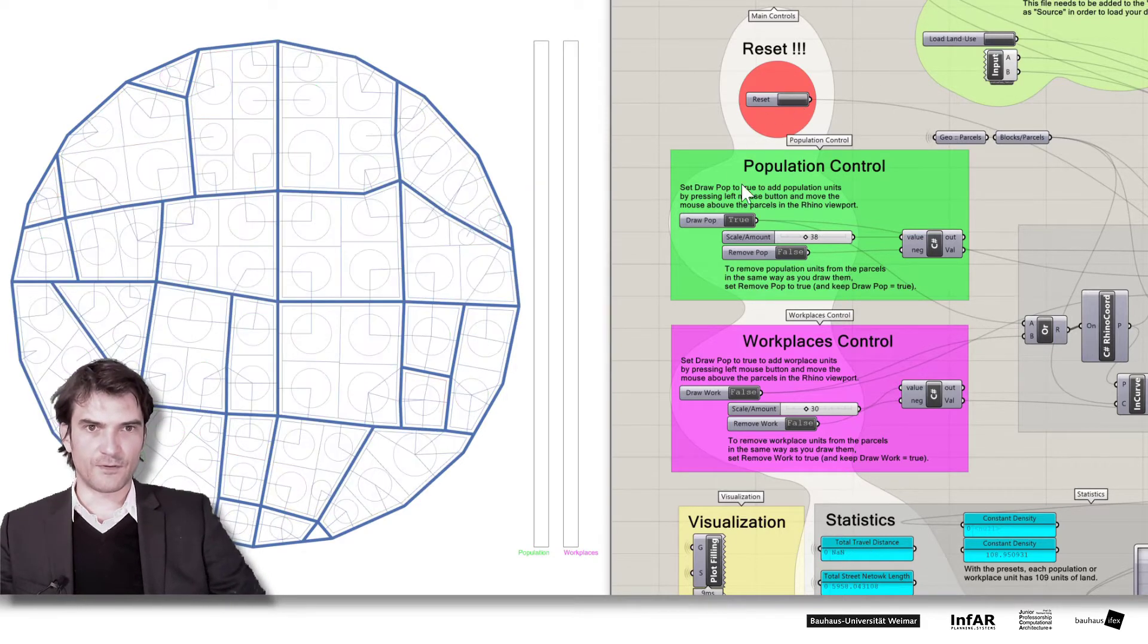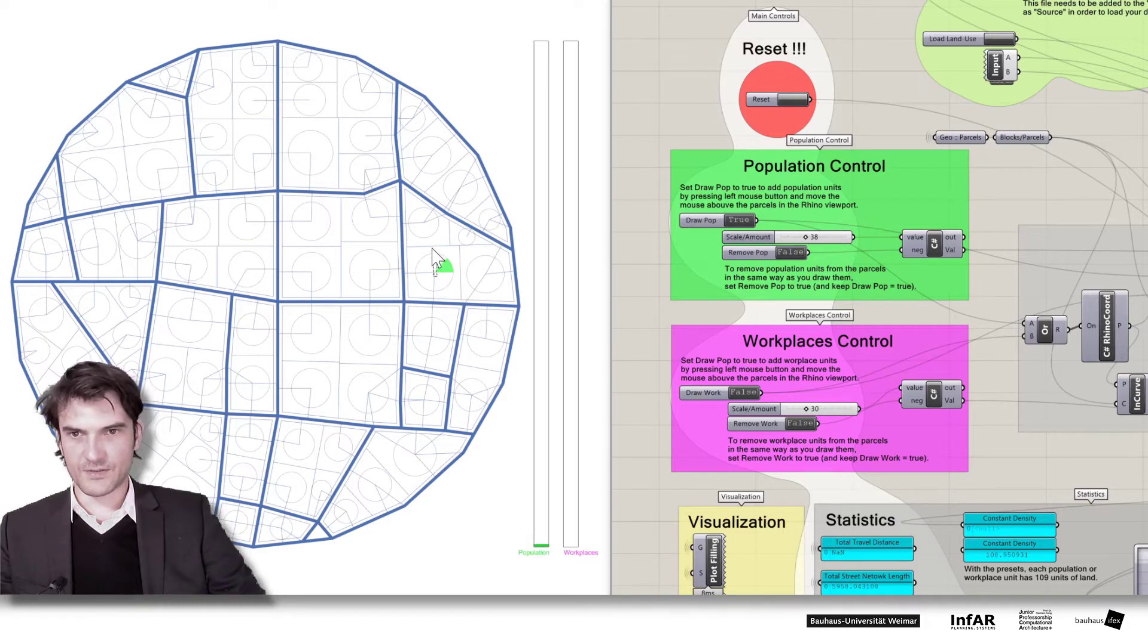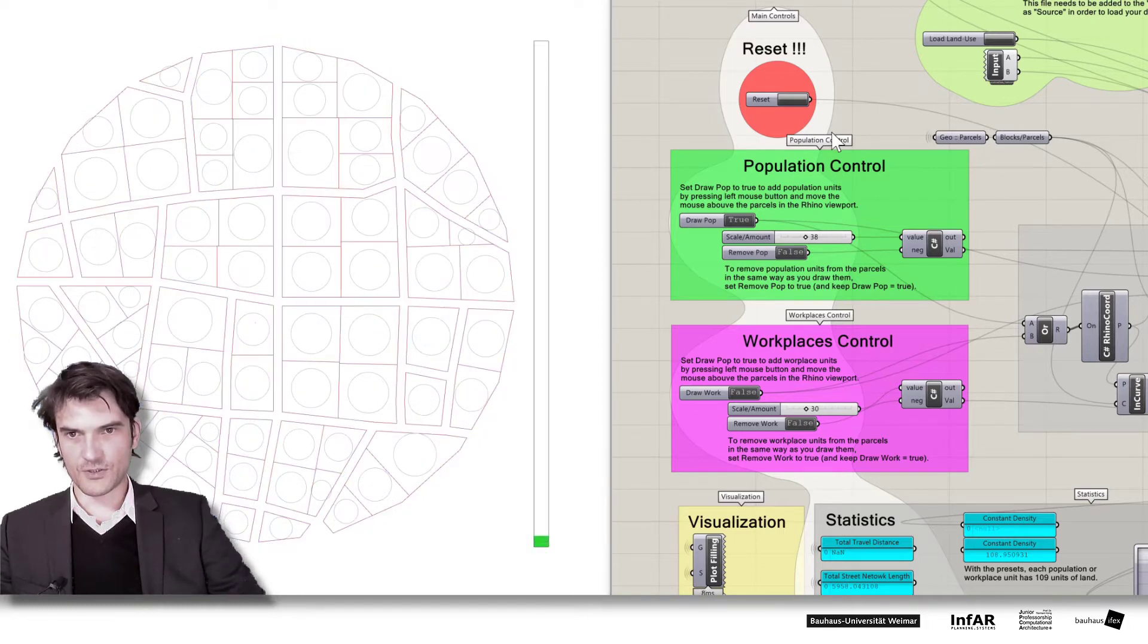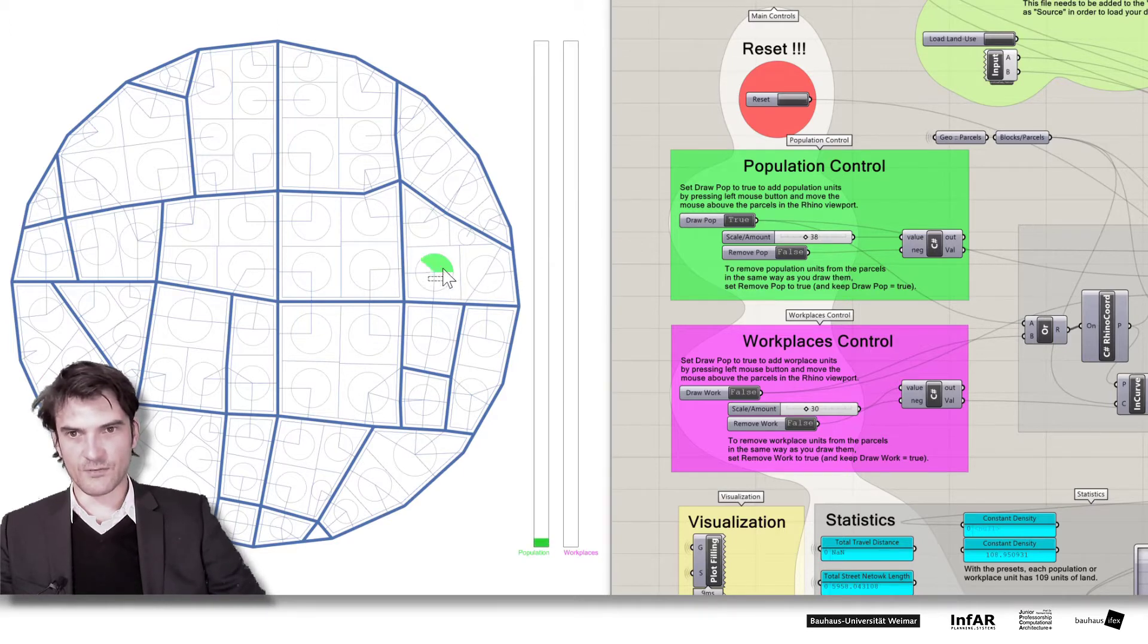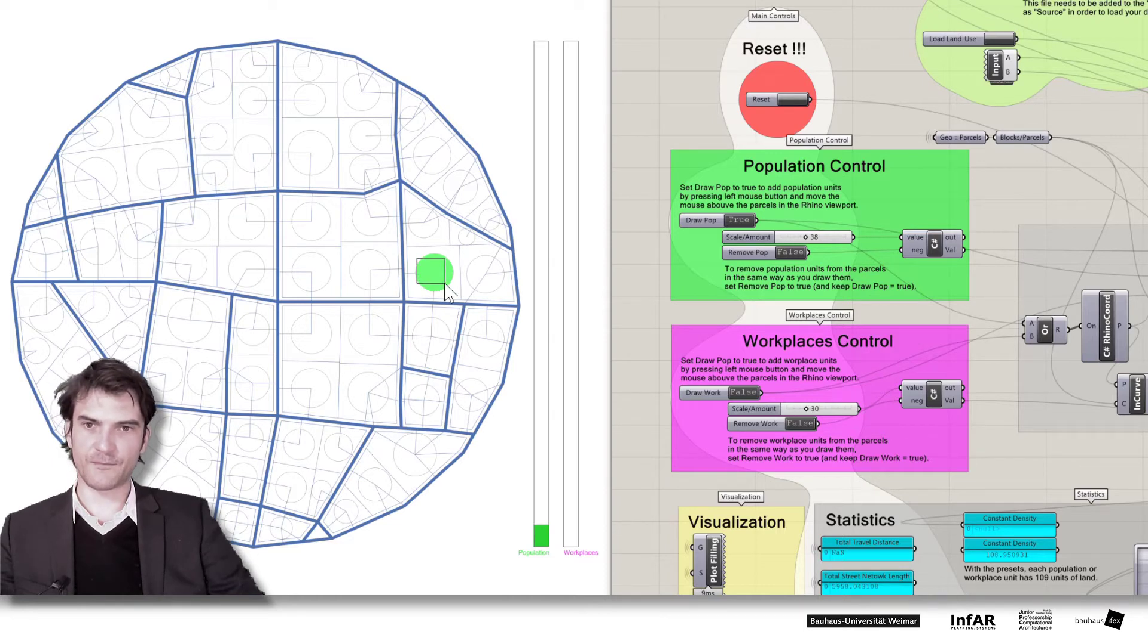Okay. But let's reset it. And now draw just population units. Just draw them into one plot. By the way you see here this selection rectangle. This doesn't mean anything. It's just something we cannot deactivate for this mouse interaction with our geometry. So just ignore it. You just draw by pressing the left mouse button and moving your mouse around. And the faster you move the mouse, the more units you place into the parcel.